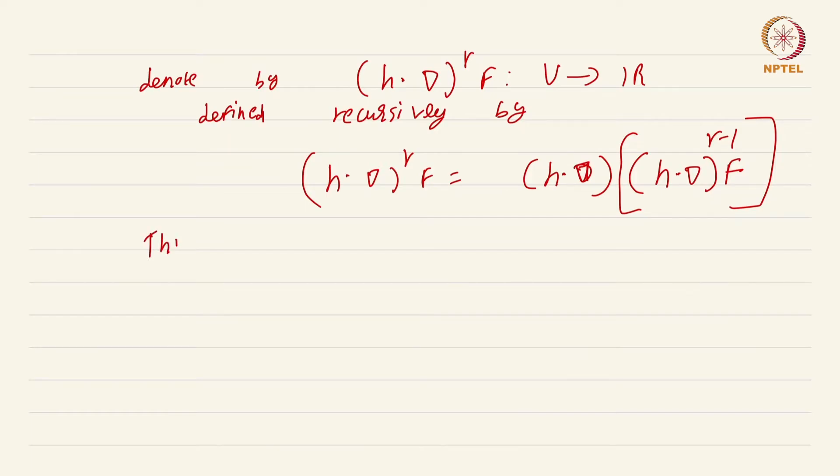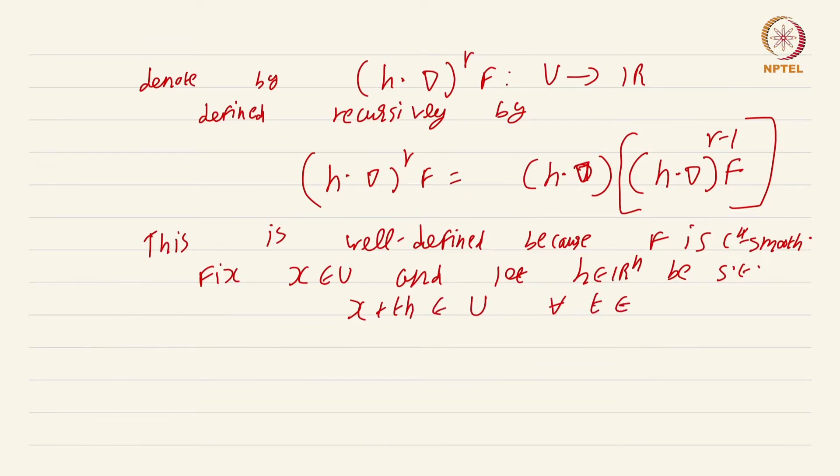This is well defined because f is C^k smooth. Now fix x in u and let h in R^n be such that x plus th is an element of u for all t belonging to the closed interval [0,1].